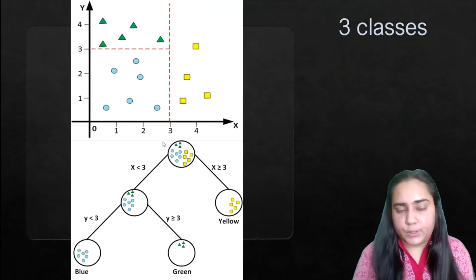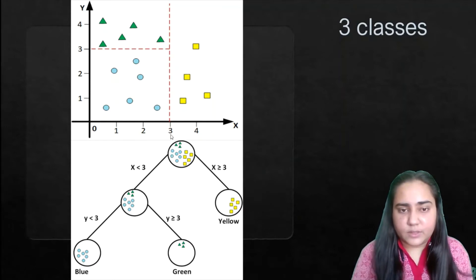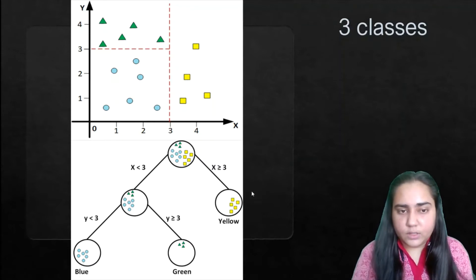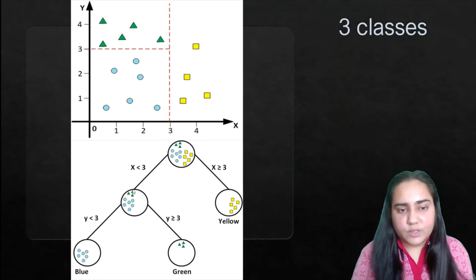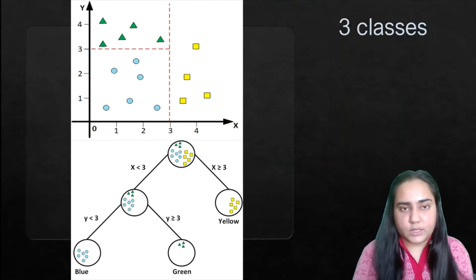If y is less than three it's blue, given that x is less than three. The same thing is represented here using a decision tree. The root node contains all the data points and we divide them based on x less than three or x greater than equal to three. If it's greater than equal to three it is yellow class. If it is less than three, green and blue are merged together, and you then do y less than three — if less, it is blue; if greater than equal to three, it's green.